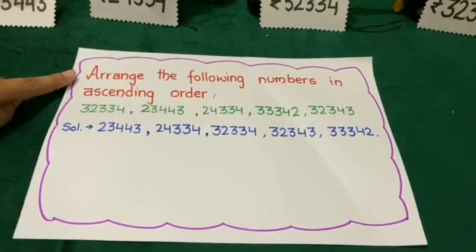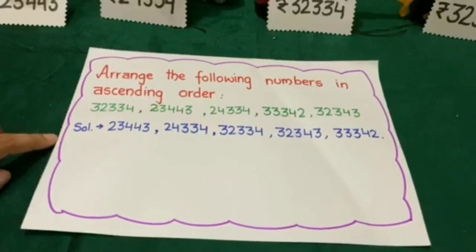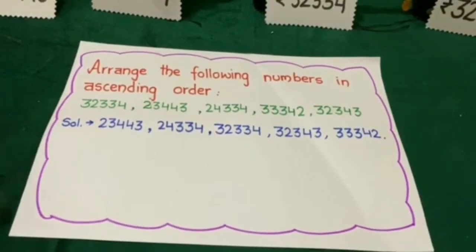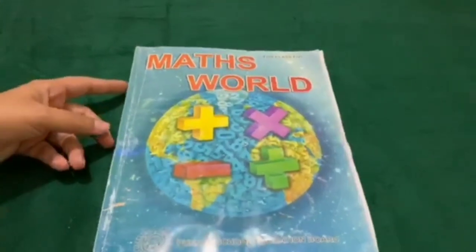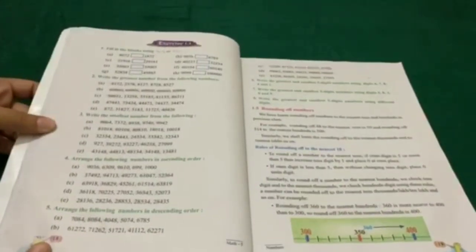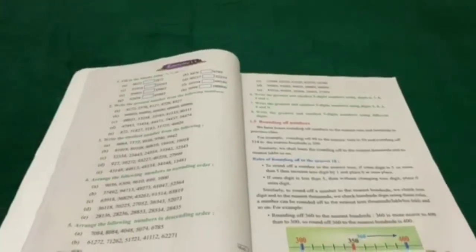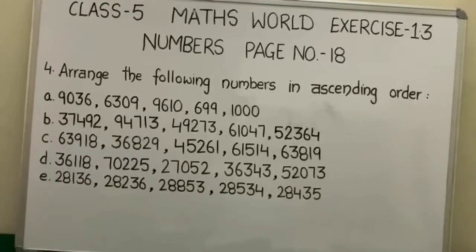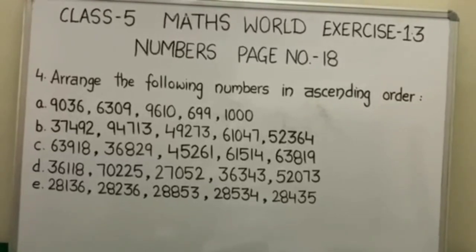Now to do your work in your notebooks, write the question, statement, and rearrange them in ascending order in the solution. You have now learned to arrange numbers in ascending order. For homework, from your mathematics book at page number 18, there is question number 4 of exercise 1.3 written on the board: arrange the following numbers in ascending order. You will solve this question in your notebooks. Thank you.